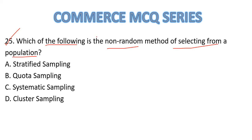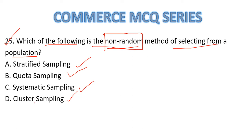Question Number 25: Which of the following is the non-random method of selecting from a population? Options: A — stratified sampling, B — quota sampling, C — systematic sampling, D — cluster sampling. The correct answer is B — quota sampling, as it is the non-random sampling method.